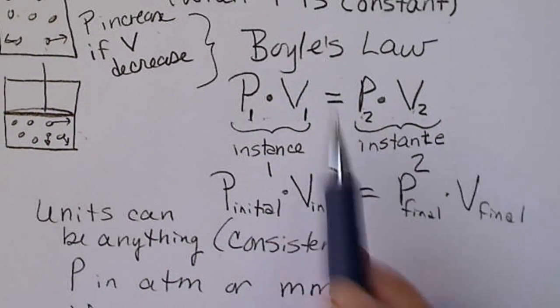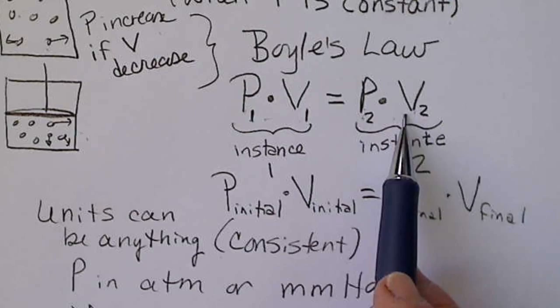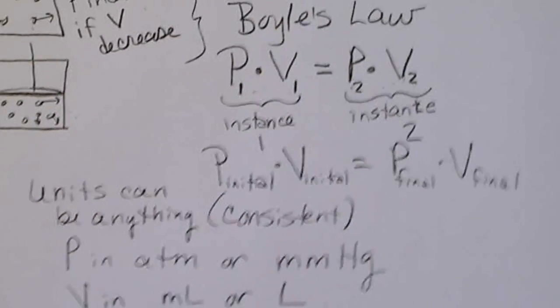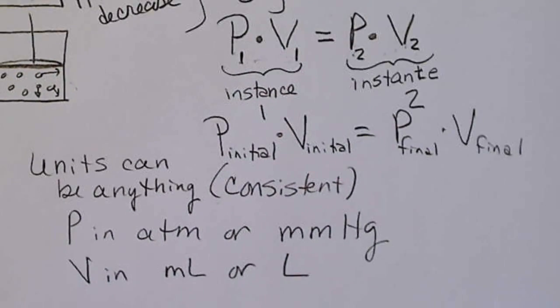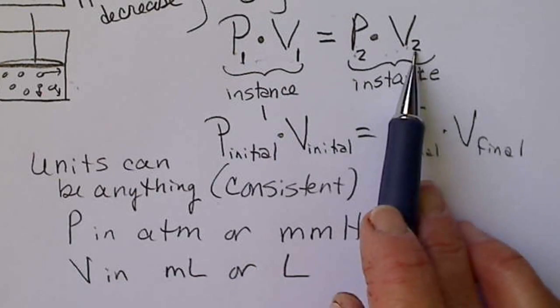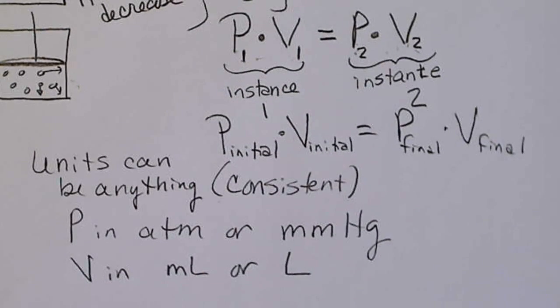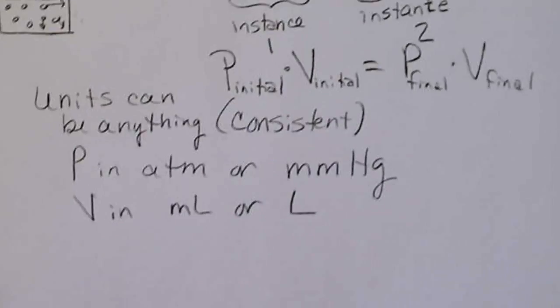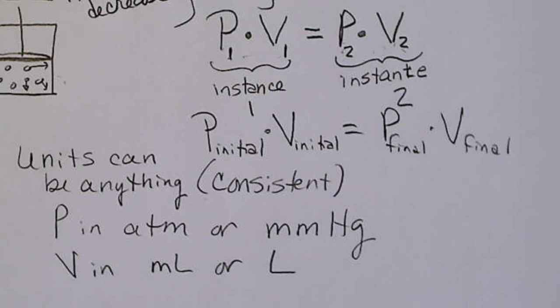And to use Boyle's Law, we have to know three out of these four parameters. So Boyle's Law is basically just plug in the three values that are given to solve for the unknown. And there's examples like that in your book, and we'll do some examples in class. Thank you.